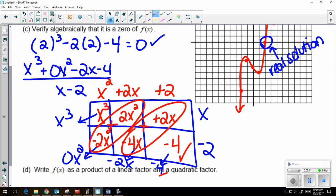Remember, if it wasn't a 0, then x minus 2 wouldn't be a factor, and I would have a remainder. But because I know it's a 0 already based on my graph, I don't have a remainder.